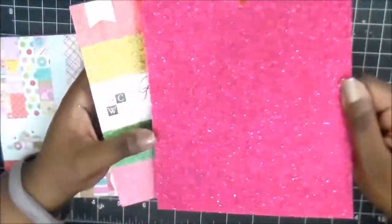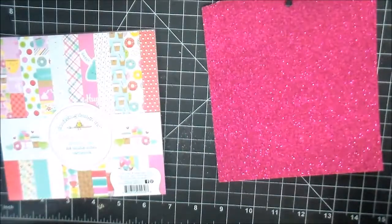And I'm also going to be using a glitter sheet from this Die Cuts with a View glitter pack that I got.